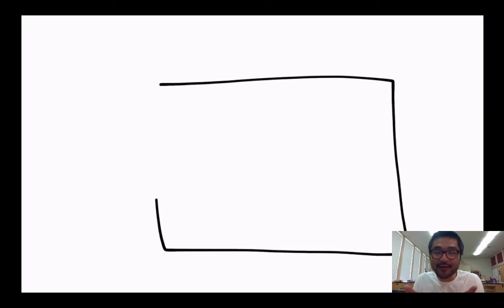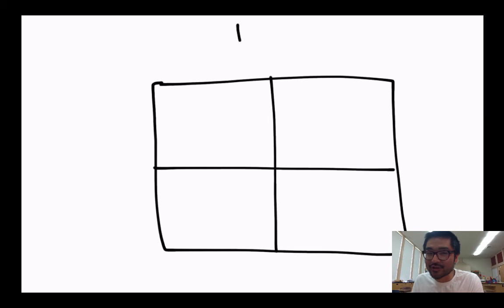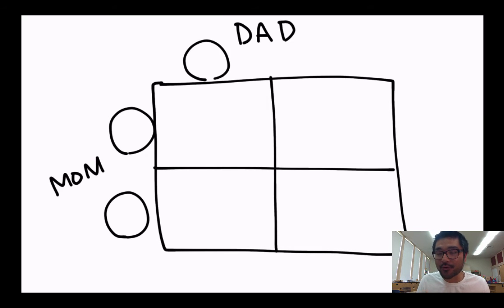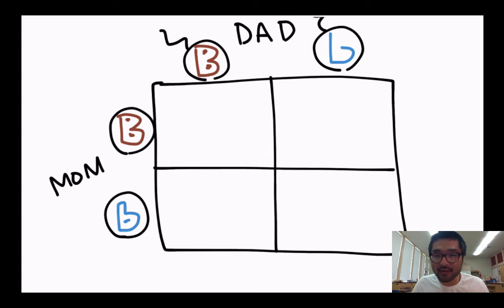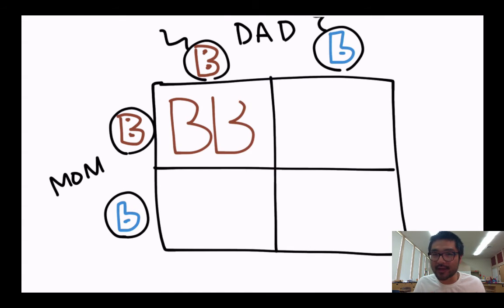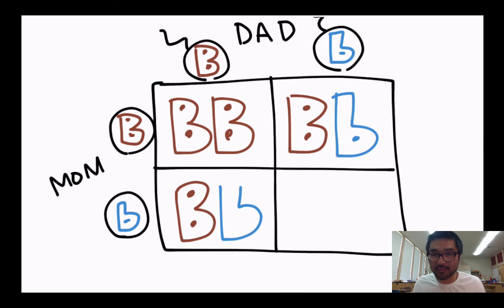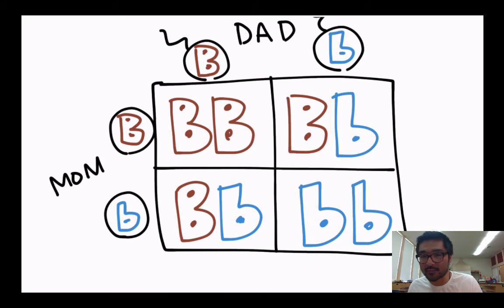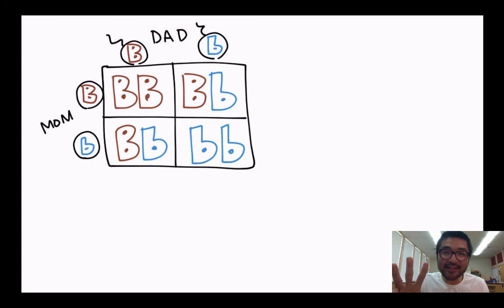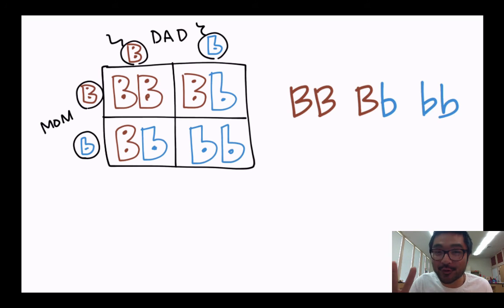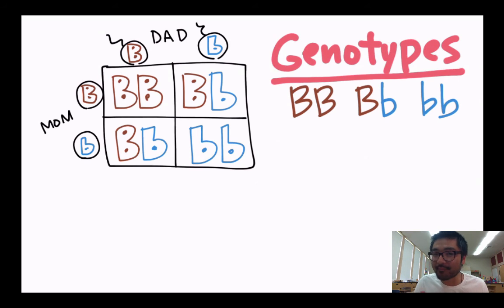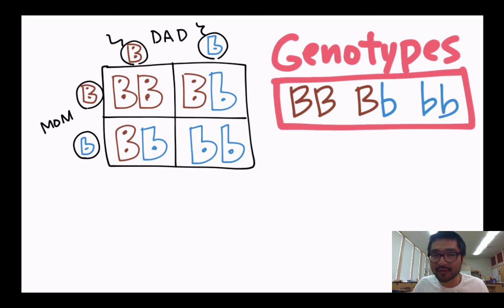And your mom can contribute either capital B or lowercase b in her egg. So through fertilization, the possible combinations you can make with these two parents are capital B capital B, capital B lowercase b, or lowercase b lowercase b. You have three different genotypes that you can make with these two parents.